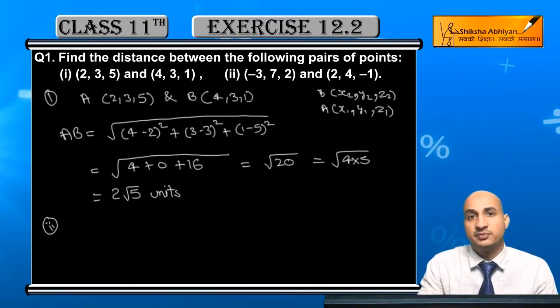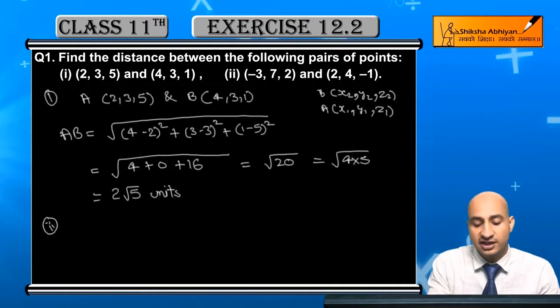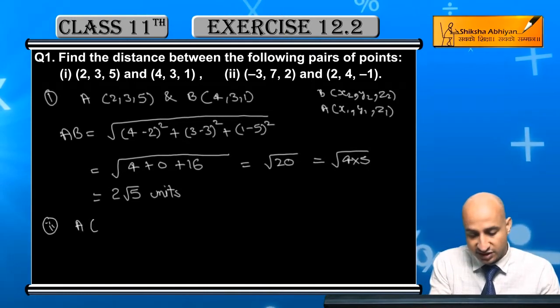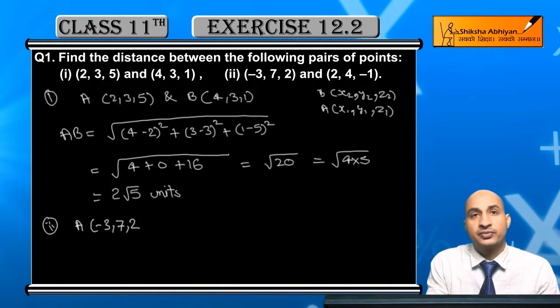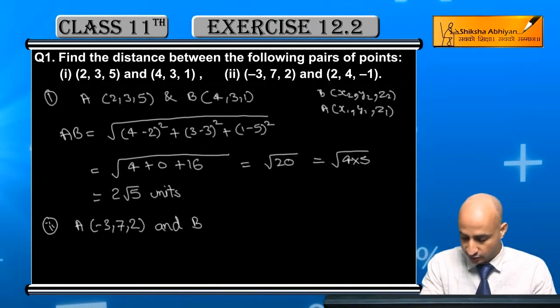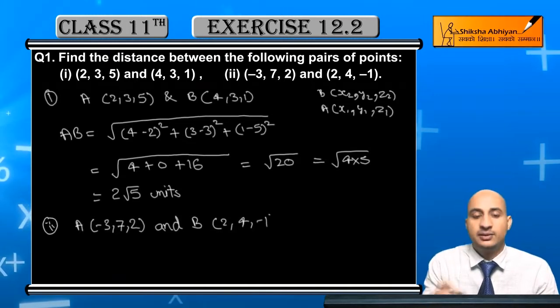Now, second, I will do all the parts. Second, which we have here, we have the value of coordinate. Again, I will give it a name, first coordinate minus 3, 7, 2. And then, next, which is B, I will give it a name, this is 2, 4, minus 1. This is the point.